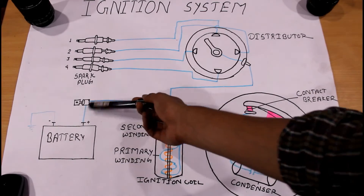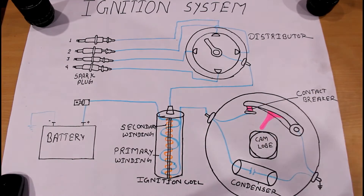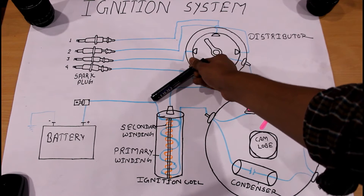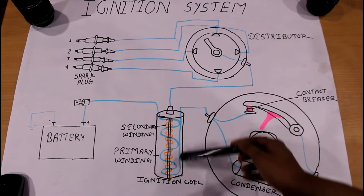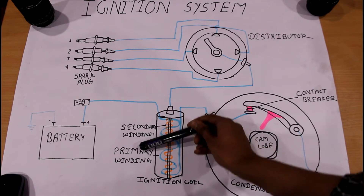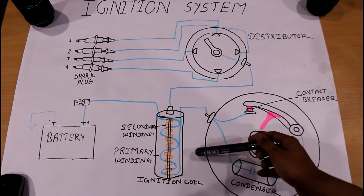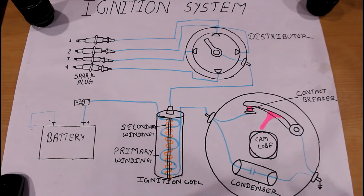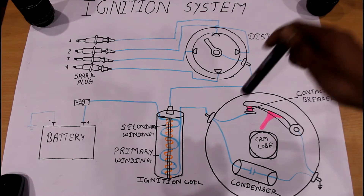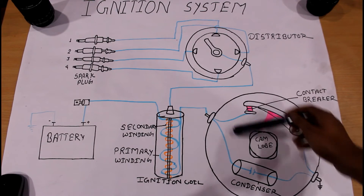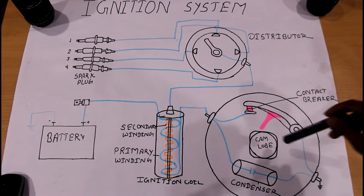When we switch on the ignition, the 12 volts from the battery comes out from the positive terminal through a wire. As you can see here, there is a primary winding and a secondary winding — two coils present in the ignition coil. The secondary winding has more turns compared to the primary winding. Now this 12 volts passes through the primary winding and goes to the contact breaker chamber.